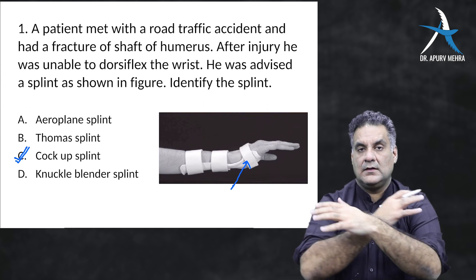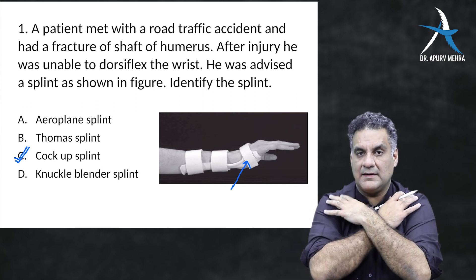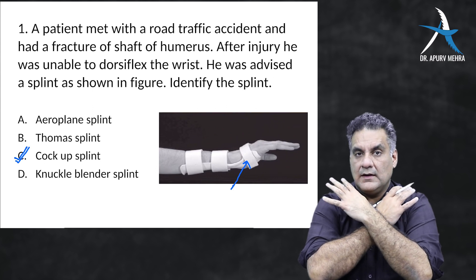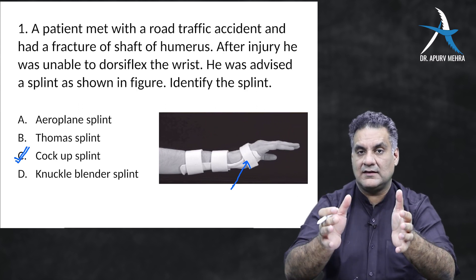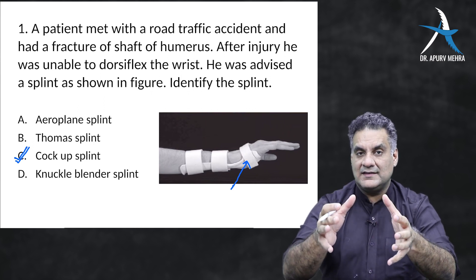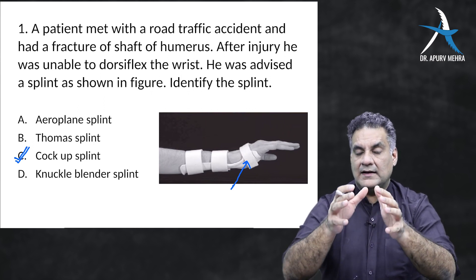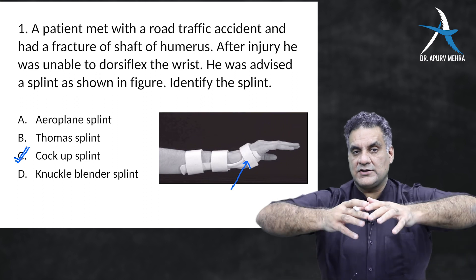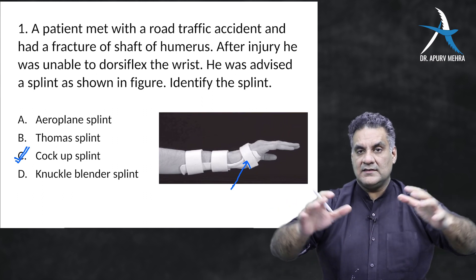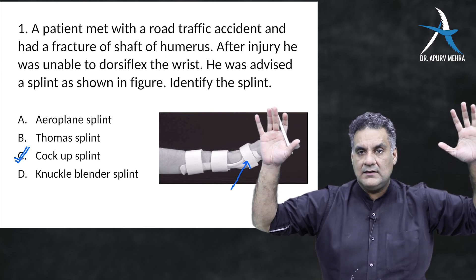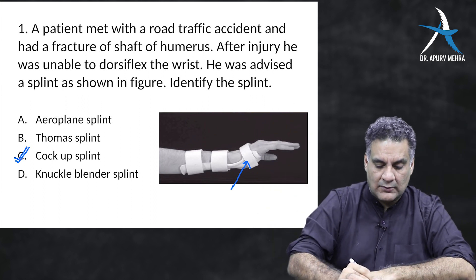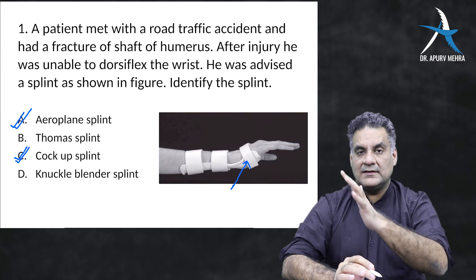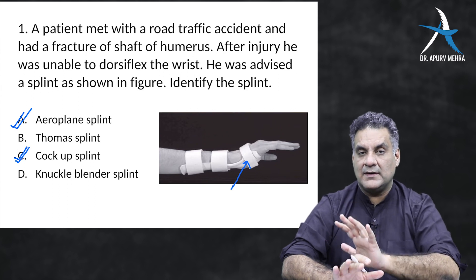Around the shoulder you have brachial plexus injuries in the cervicobrachial corridor. The brachial plexus involves C5, C6, C7, C8, and T1 nerve roots. C5 and C6 are the commonest ones to be involved, causing problems with shoulder abduction and elbow flexion. In such cases, the splint given places the arm into abduction and elbow flexion — it looks like an aeroplane, so it is called the aeroplane splint.